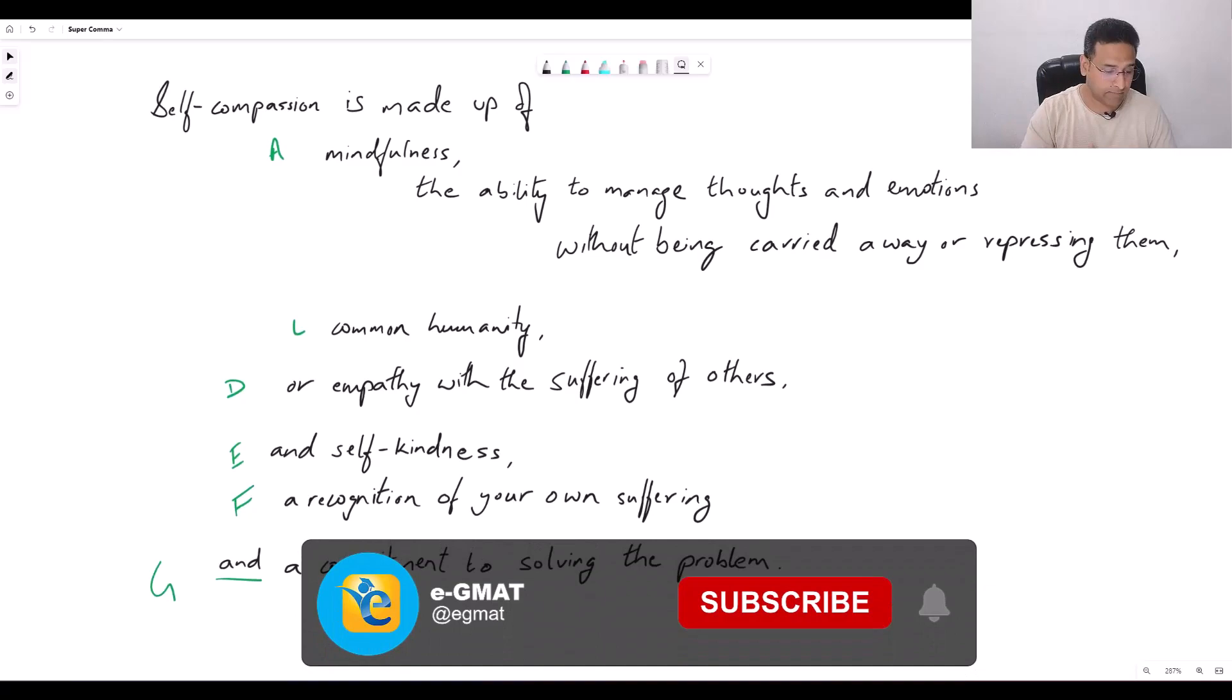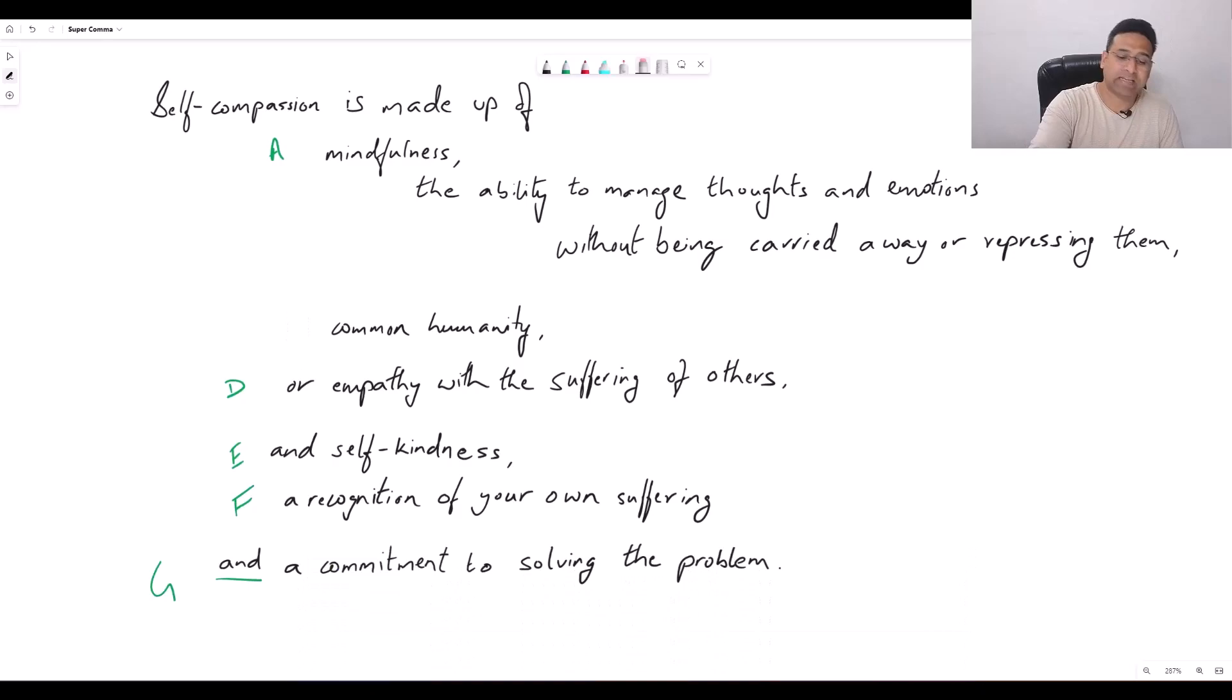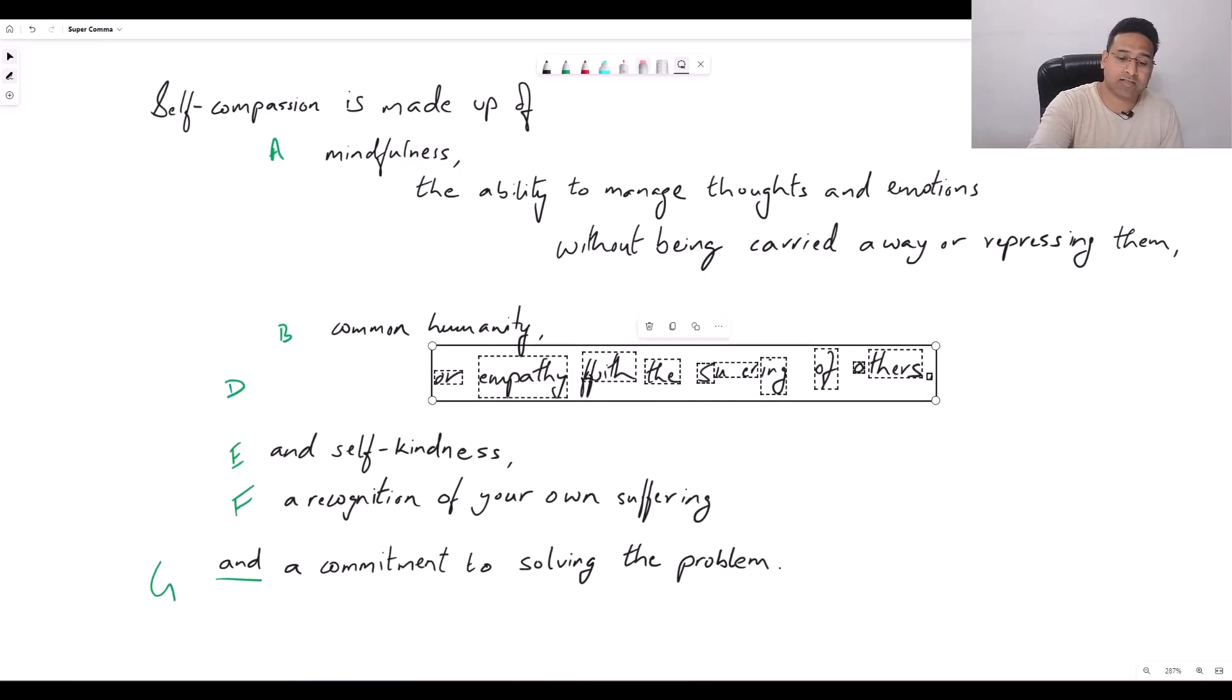You see how that works? This is what we're going to replicate now and we're going to do this for every single entity. So the next one is common humanity. Now clearly common humanity has a name and it is the next entity in this list. So let's call this B. Now let's look at the next entity D, our erstwhile D or empathy with the suffering of others. Now ask yourself, empathy with the suffering of others, is this different from humanity? What does it mean to be humane? It means to empathize with people, to care, to be considerate of other people and that is nothing but empathy with the suffering of others. This is our second eureka moment and we can clearly see that from a meaning perspective this entity is a modifier of B. It's not a separatist entity so we can erase D from here.